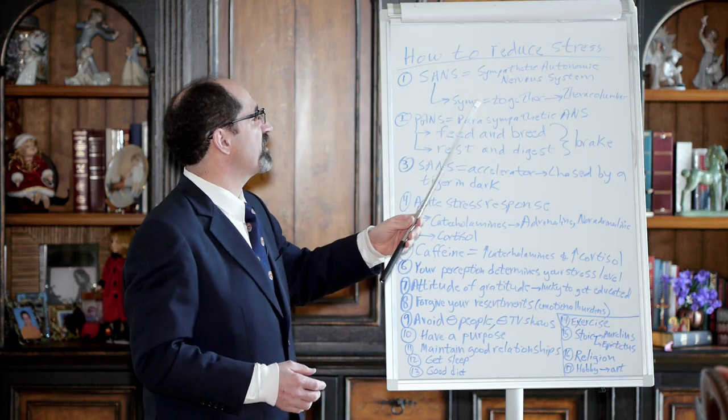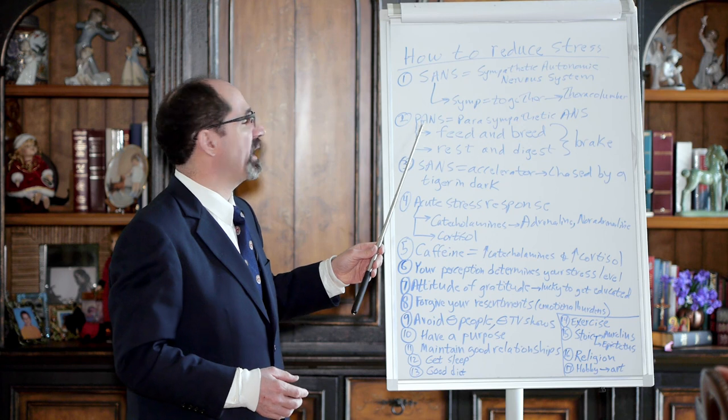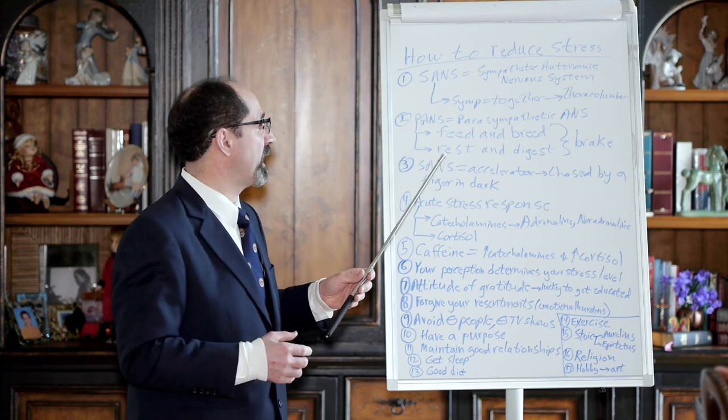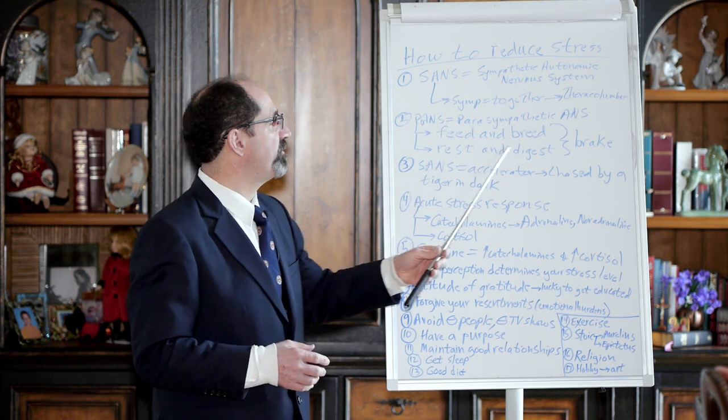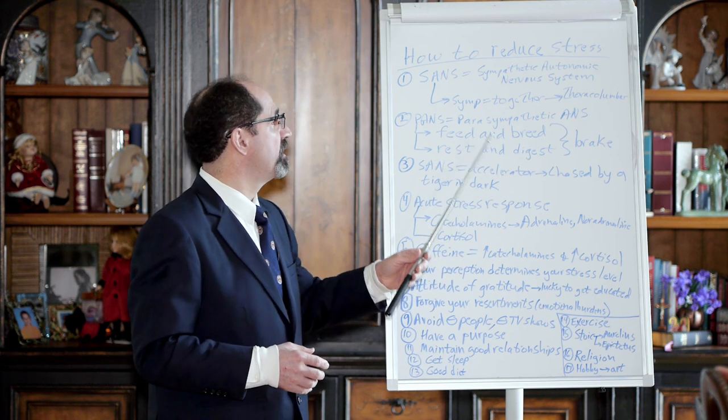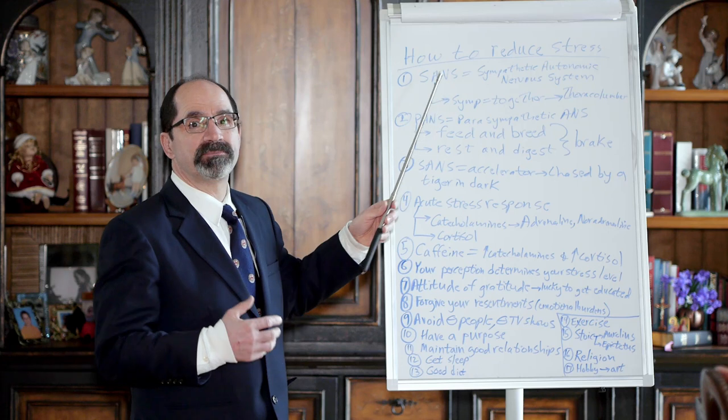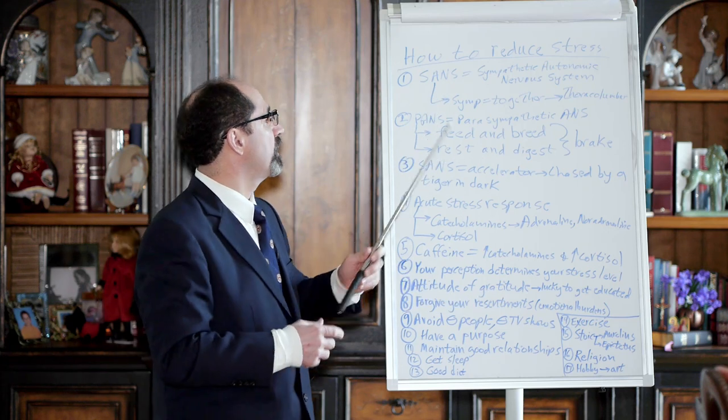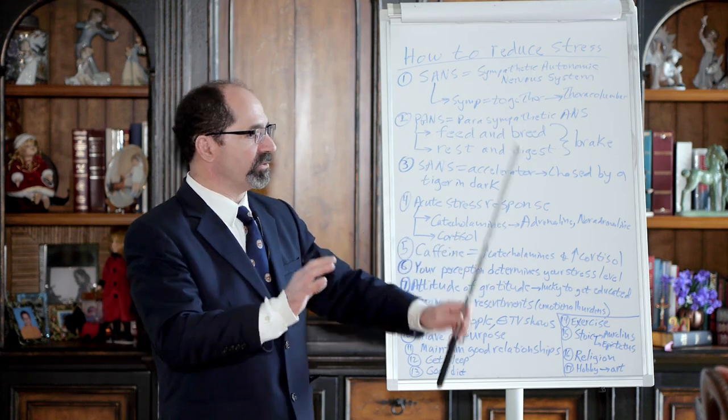And basically you want to spend as much time of your life as you can in PANS, parasympathetic autonomic nervous system. It's also called feed and breed, it's also called rest and digest. Sometimes the SANS, that's also known as fight or flight, is the accelerator, if you will, and PANS is the brake.